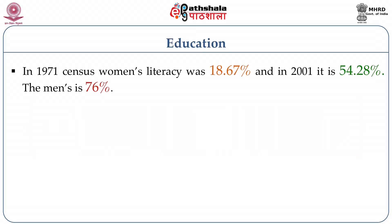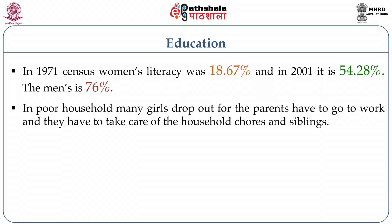The literacy rate for women was 18.67% and has risen to 54.28% in the 2001 census, whereas men's literacy rate is 76%. In many poor households, girls drop out, and if the parents have to go to work, importance is not given to women's education because girls have to take care of household chores and siblings. It is women's education that takes a break.